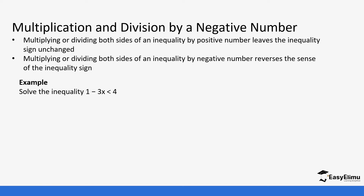So what do I mean when I say this? For example, in this question: 1 minus 3x is less than 4. Normally when we are solving, first of all we eliminate the constants, just like we did in the previous lesson. So we subtract 1 from each side, giving us 1 minus 1 plus, so 1 minus 3x is less than 4 minus 1. This gives us minus 3x is less than 3.